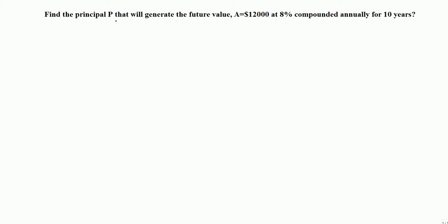Find the principal P that will generate the future value A equals $12,000 at 8%, that's the rate. So we have rate R equals 8 divided by 100, we get 0.08, compounded annually for 10 years.